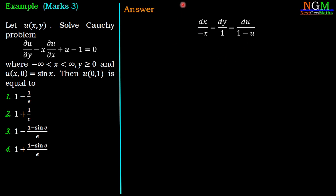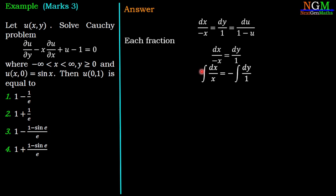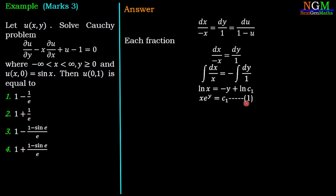Now we use this ratio to find the solution of the partial differential equation. Taking the first two terms, we have dx/(−x) = dy/1. Integrating both sides: ∫dx/x = −∫dy, giving ln x = −y + ln c1. Simplifying, we get x·e^y = c1. That is the first equation.